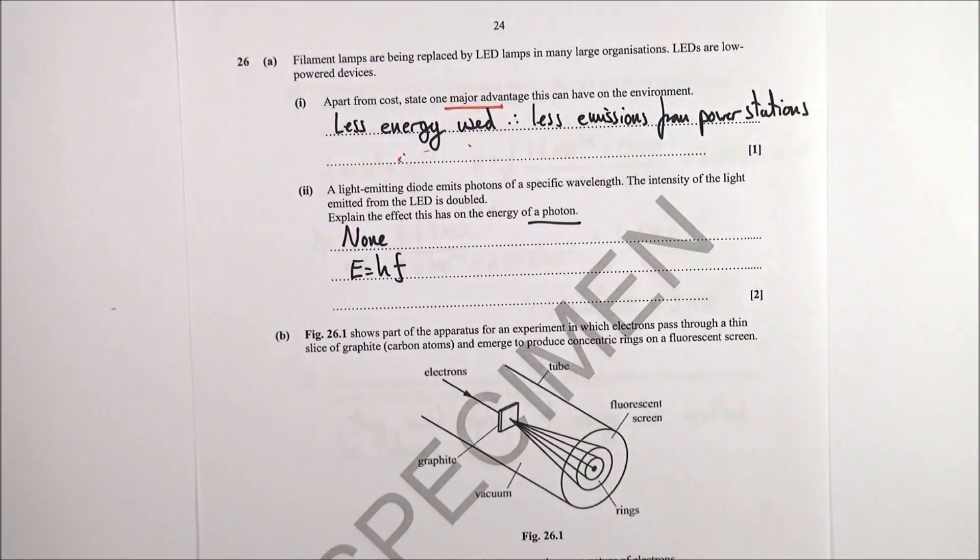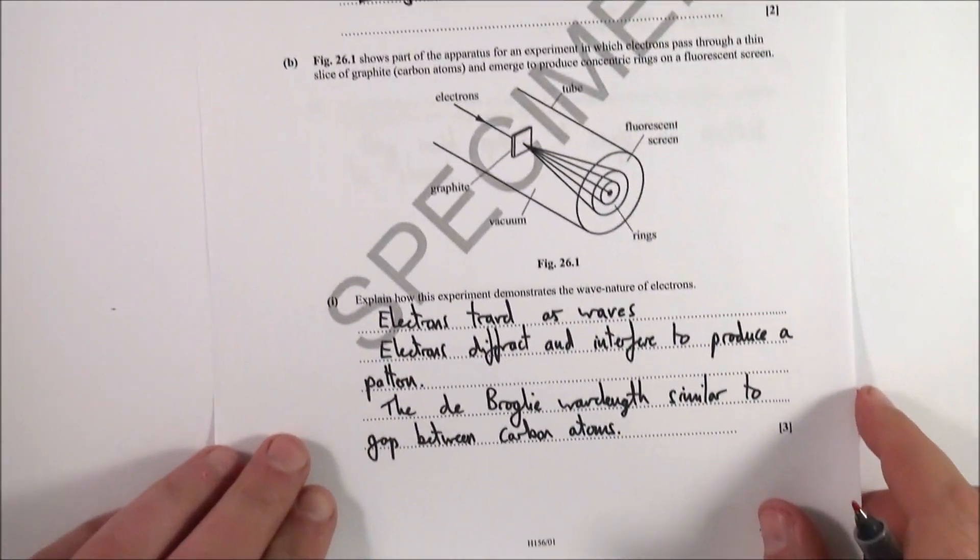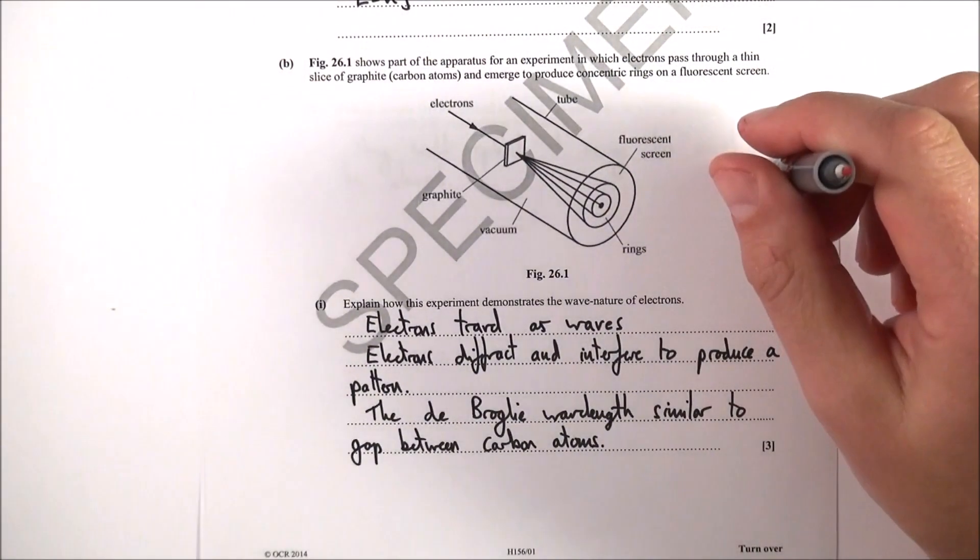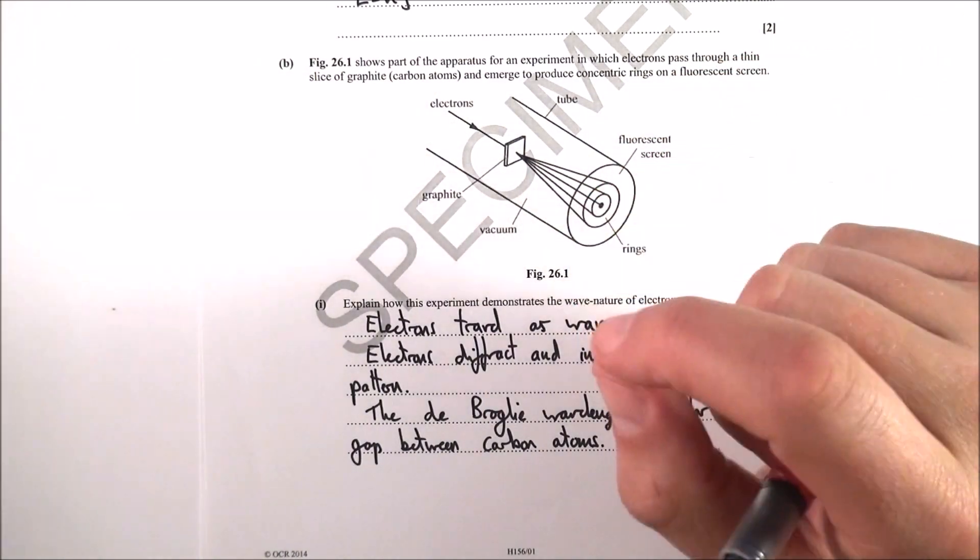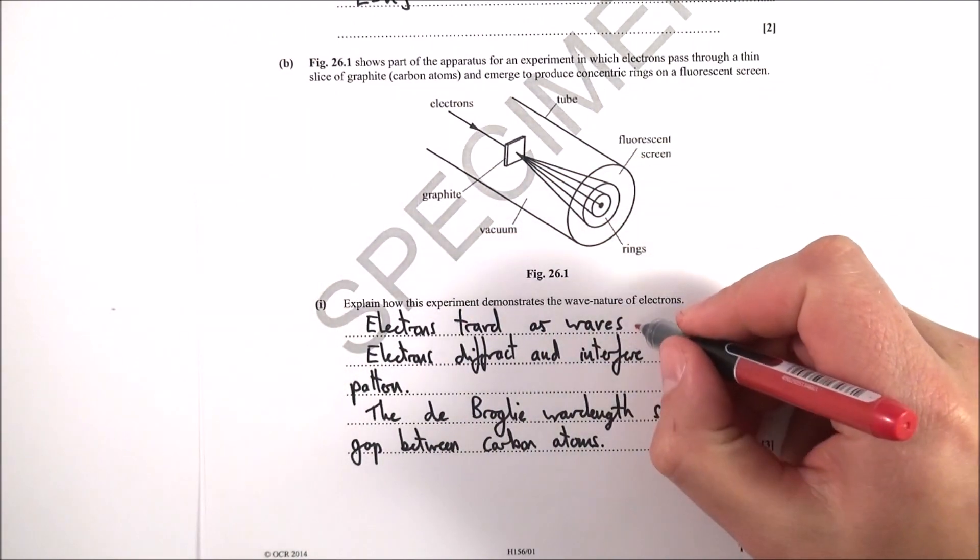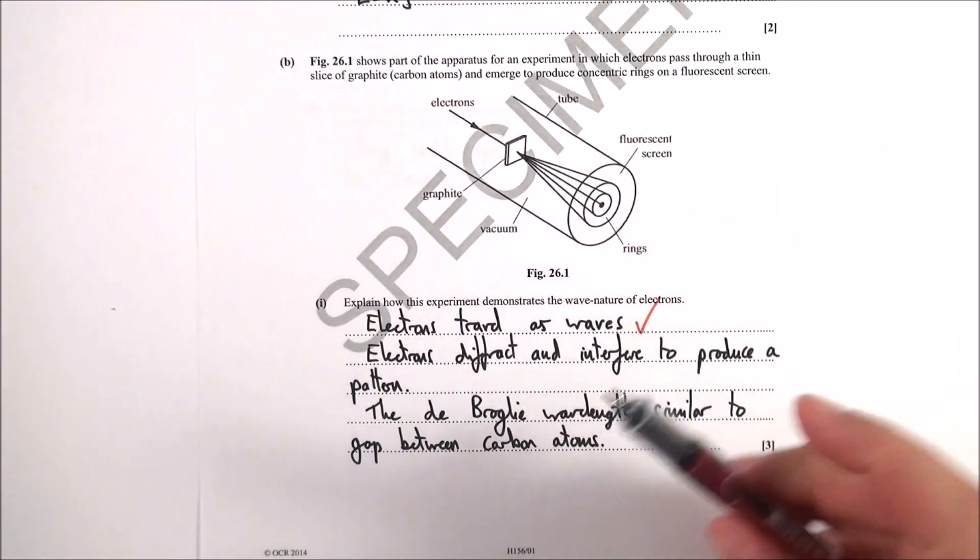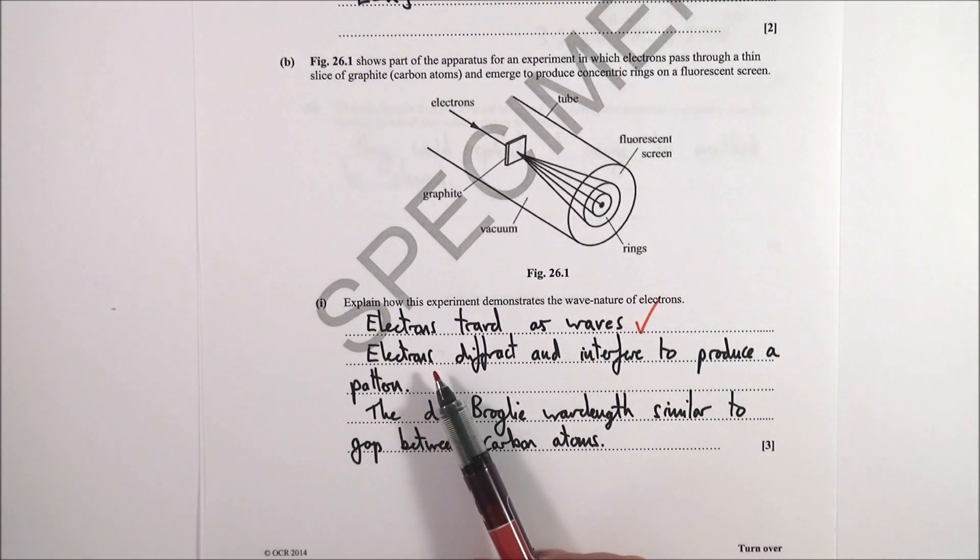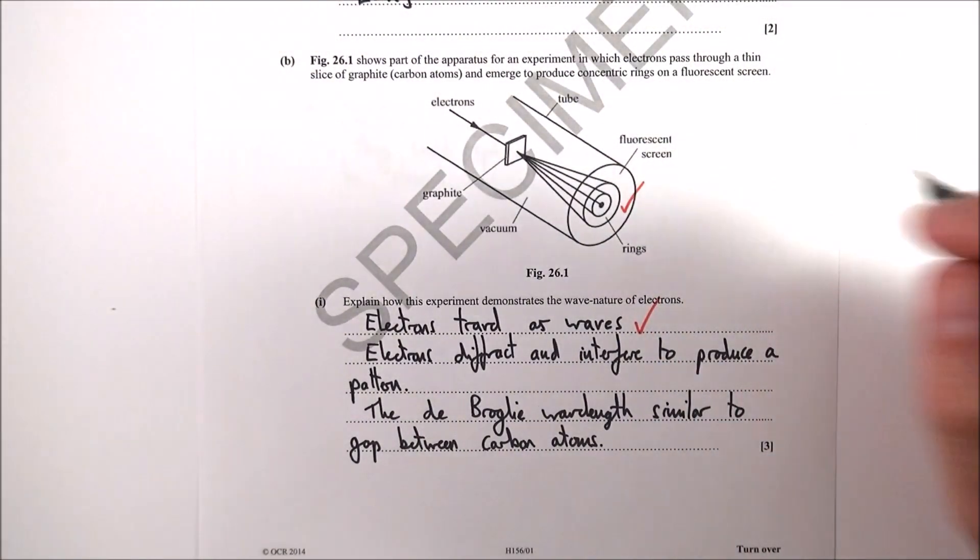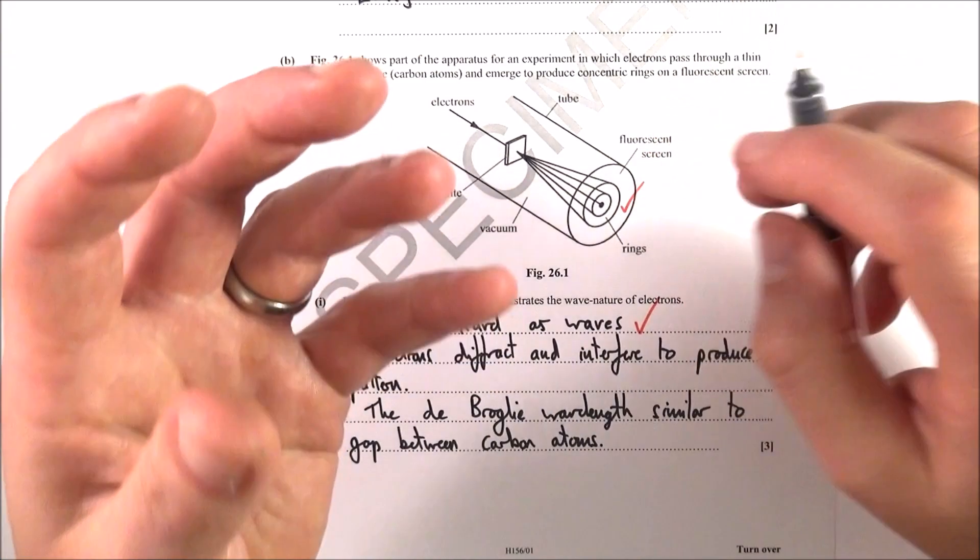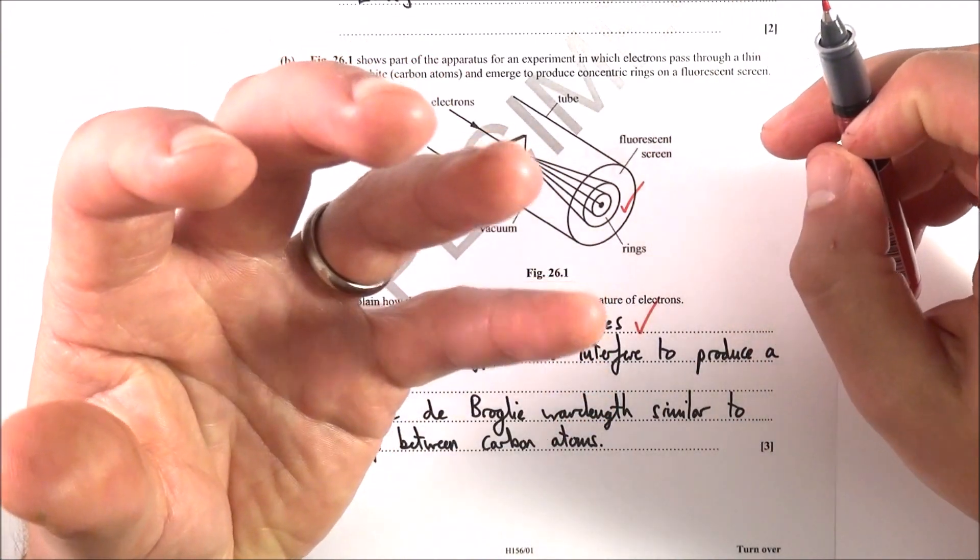The next question is electron diffraction, which you should be familiar with. Electrons interact like particles but travel as waves. So electrons travel as waves, diffract, and interfere to produce a pattern. What you have are concentric rings here, which are like the fringes from the last question but rotated through 360 degrees.